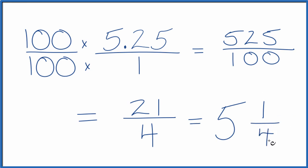We could check that 5 times 4 is 20. 20 plus 1, that gives us the 21, and we just keep the 4 the same. So in answer to our question, when we write the number 5.25 as a fraction, we get 21 fourths, or the mixed number 5 and 1 fourth.